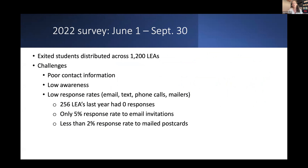We encounter a lot of challenges in trying to reach students. We have very poor contact information — the vast majority of email address contact information we have is a district-provided email address, which those students clearly are no longer using as they've exited the district over a year ago. Another challenge is just low awareness. People have never heard about the post-school outcome survey, they don't know that it's real or that it's valid. We want to increase brand awareness that this is a real thing, that the state is doing this every year, and that when they get that invitation, they should recognize it and participate more readily.